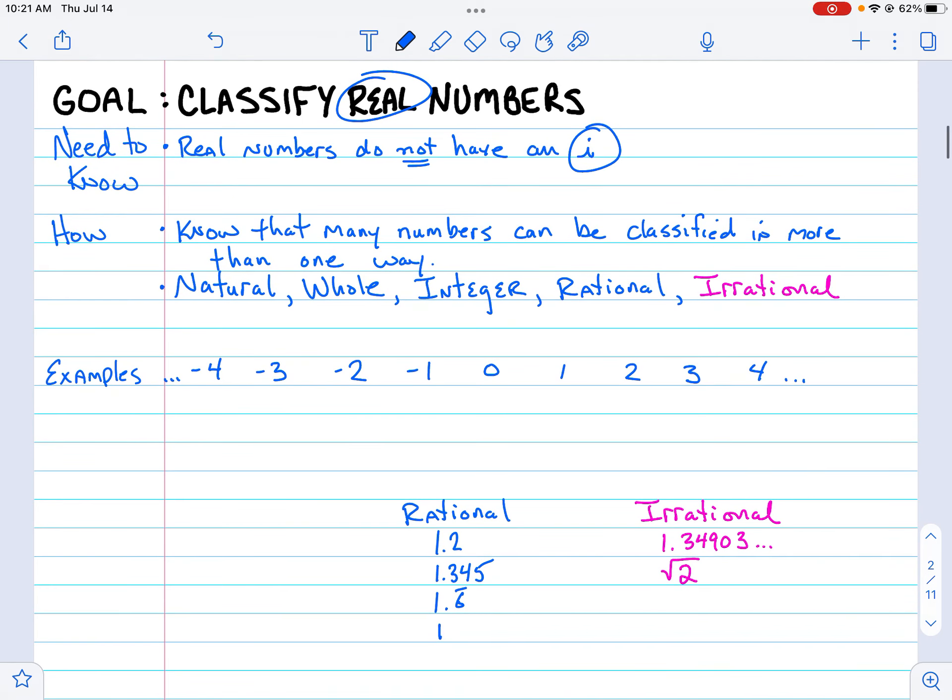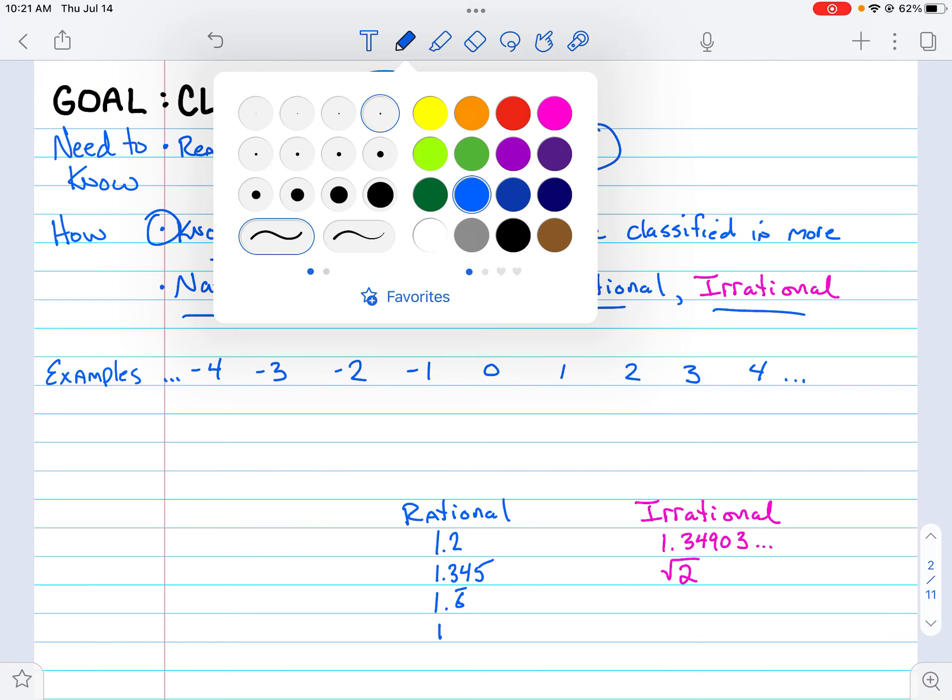In this video, we're dealing only with things that are real. Having said that, there are five different types of real numbers, and each number can potentially have more than one way to describe or classify it. So let's get into which ones are which.